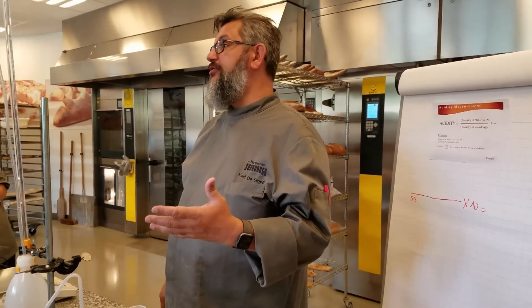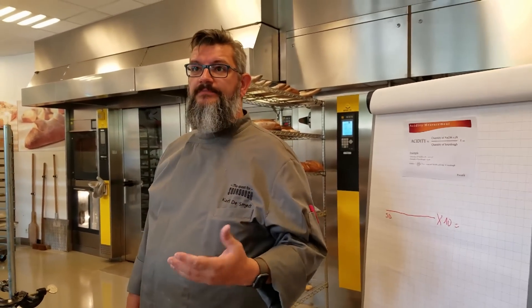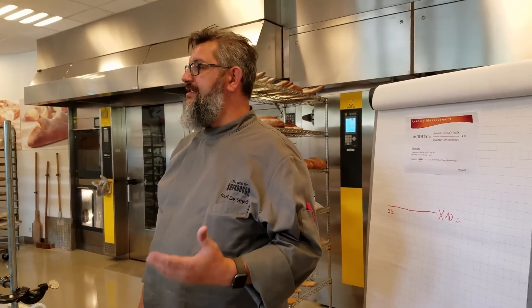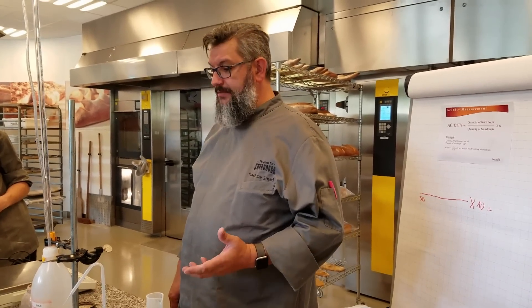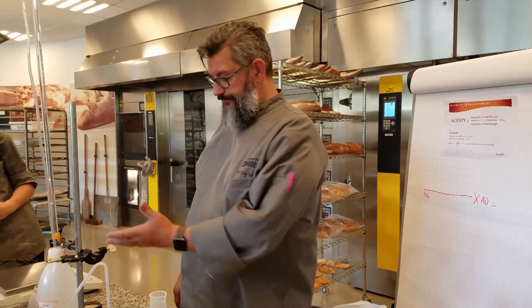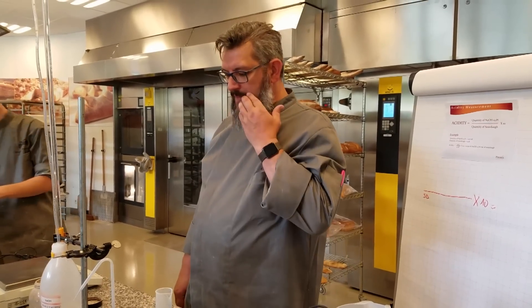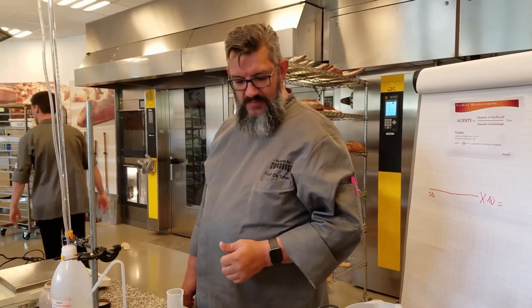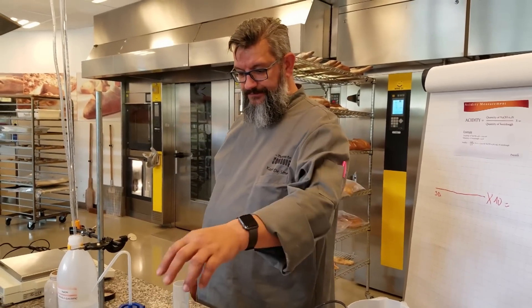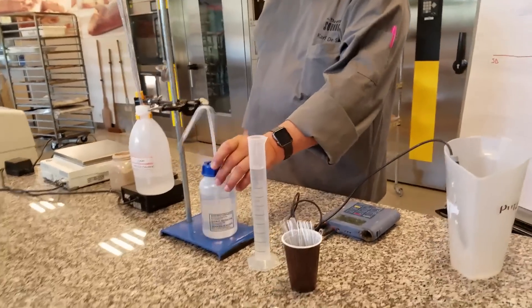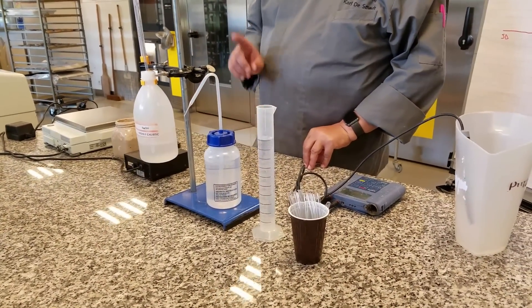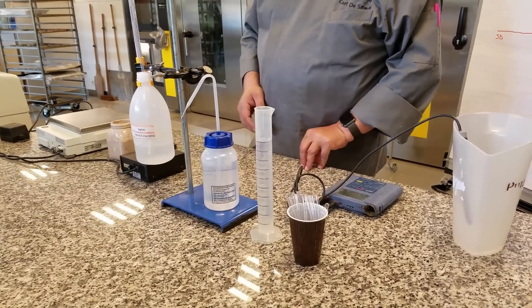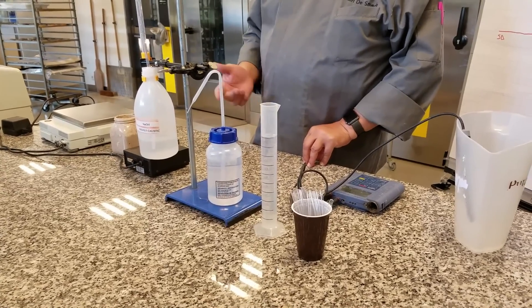Notice that your sourdough is becoming too sour, that there is too much acidity. Now the only thing to measure that is doing a titration. For a titration you need distilled water, you need a solution of sodium hydroxide at one mole that you can find in a drugstore.